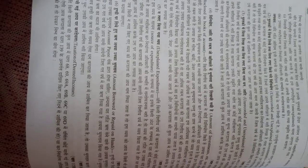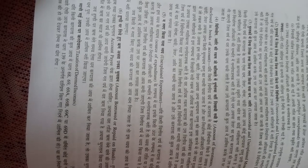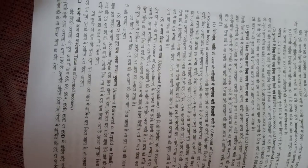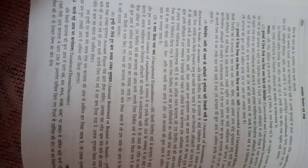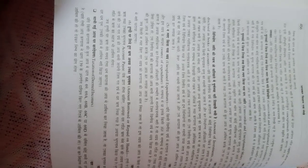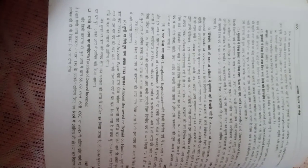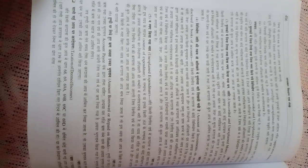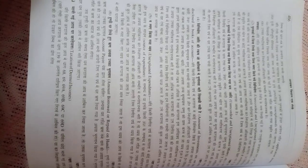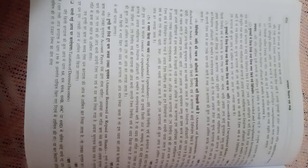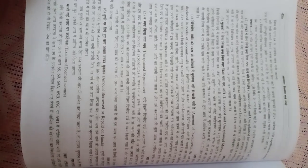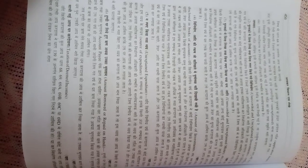Then there is unexplained expenditure — expenditure for which you do not know the source of money used to make it — and amounts borrowed on or repaid on hundi. All unexplained and undisclosed income, including any amount borrowed on hundi, will be included under deemed income. These components — cash credits, unexplained investments, unexplained expenditure, and hundis — are all included in deemed income.